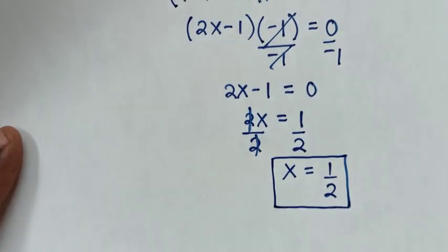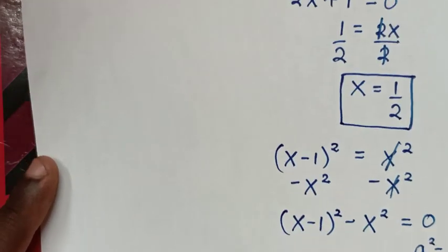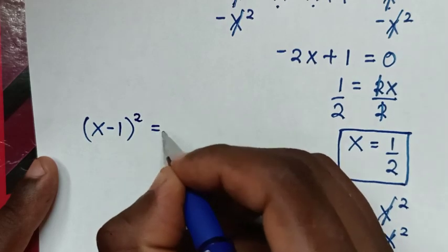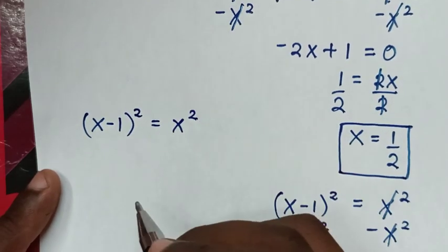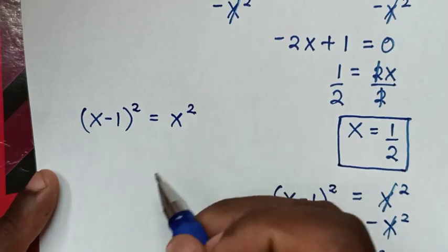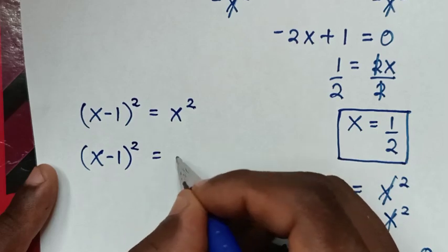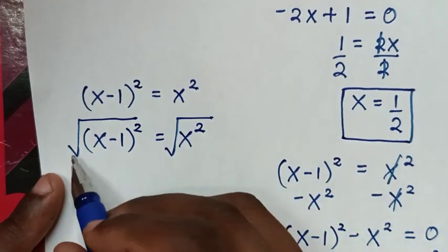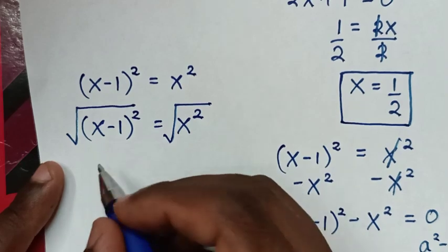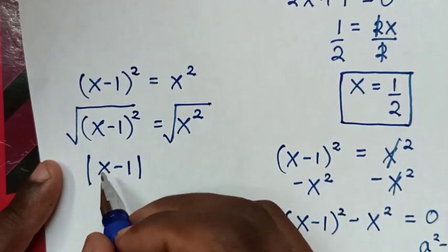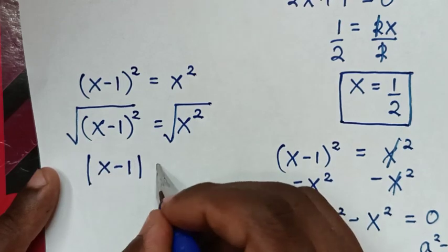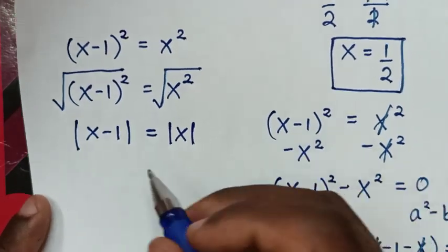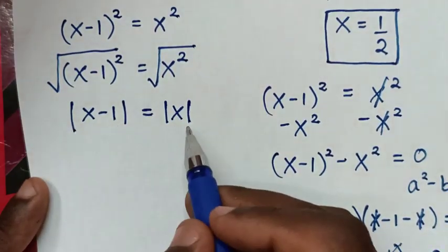To solve using the third method: from our problem (x minus 1) squared equals x squared, we apply square roots to both sides. The square root of (x minus 1) squared gives the absolute value of (x minus 1), and the square root of x squared gives the absolute value of x. Because we have two absolute values, we have two cases.